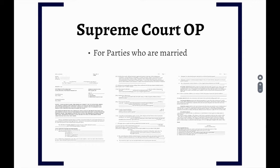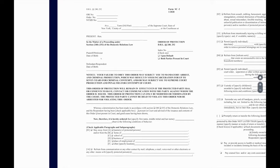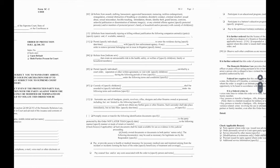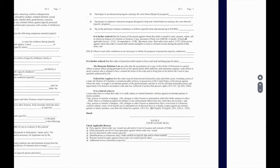Moving on to Supreme Court OPs. The Supreme Court can issue orders of protection between parties who are married or who are in the process of getting a divorce. The Supreme Court order lists two parties — the plaintiff/petitioner and the defendant/respondent. Much like the criminal OP, the rest of the document has a series of checkboxes indicating the restrictions placed by the order. If a box is not checked, that restriction is not in effect.